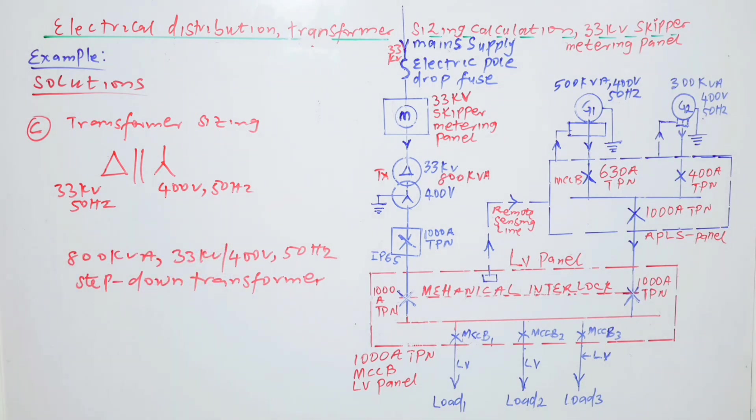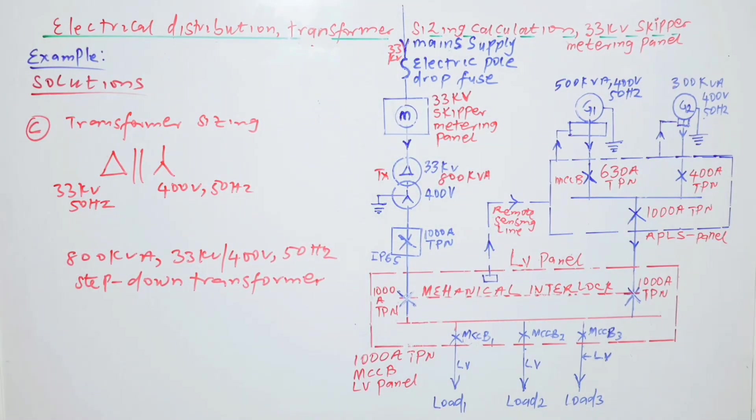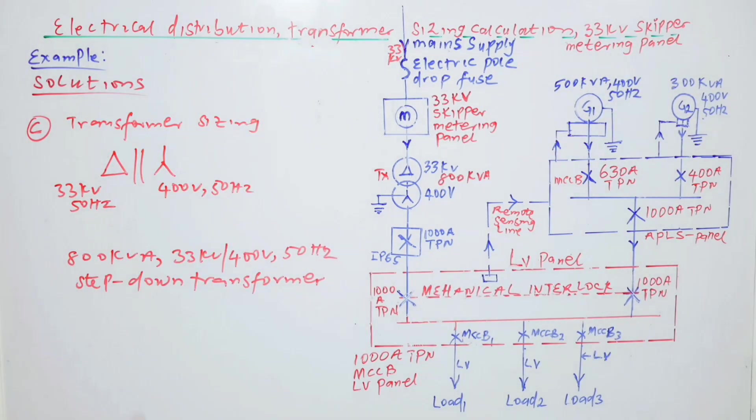And the medium voltage side is 33 kV. The low voltage side is 400 volts. Both sides are at 50 Hz, and it is a step-down transformer. Hence or otherwise means without necessarily going through any rigor, it's just a deduction. We are deducing the size of the transformer from what we have done in the A part and the B part.